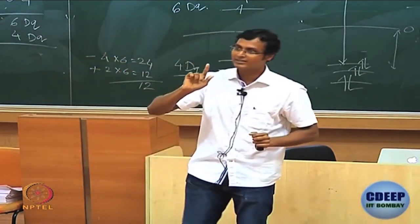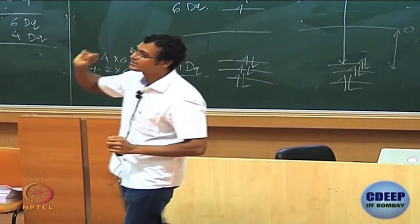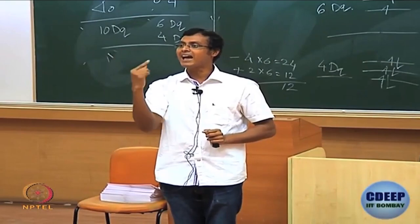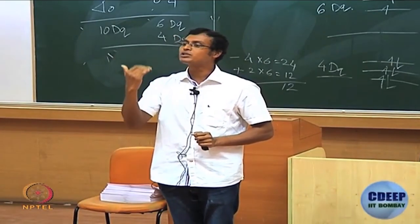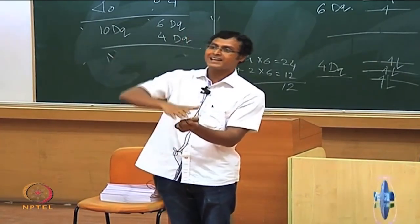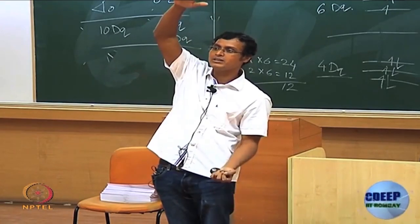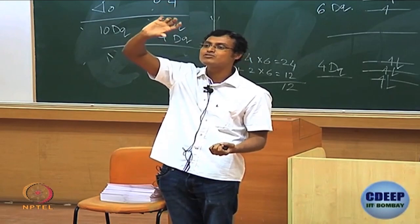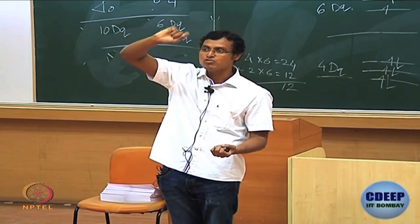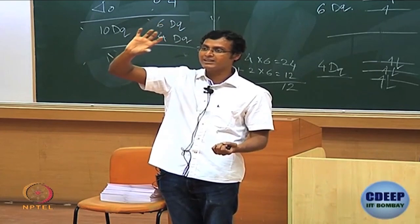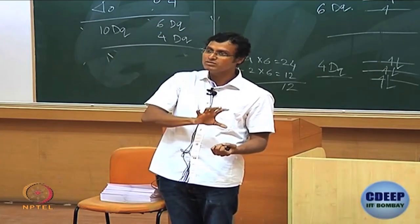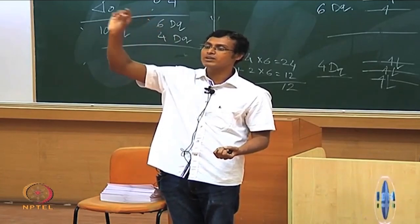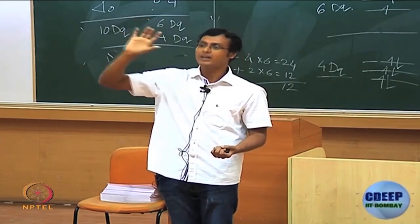That is why in tetrahedral you will never have any low spin configuration. The extent of separation between T2 and E — and in this case we do not say T2g and Eg, we say T2 and E — same dxy, dyz, dxz is T2, and E is dx²-y² and dz².